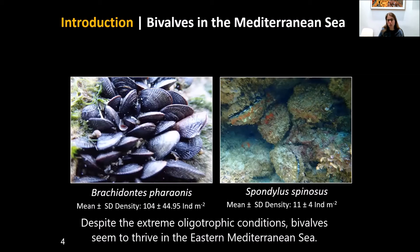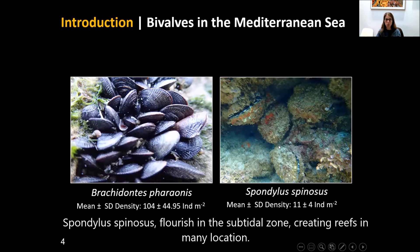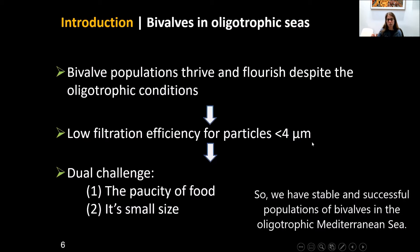Despite these extreme oligotrophic conditions, bivalves seem to thrive in the Eastern Mediterranean Sea. The invasive mussel forms dense mussel beds covering large areas in the tidal zone, and Spondylus spinosus flourishes in the sub-tidal zone, creating reefs in many locations. We have a stable and successful population of bivalves in the oligotrophic Mediterranean Sea.